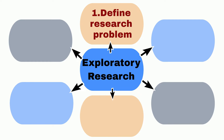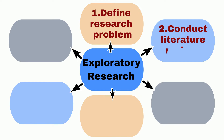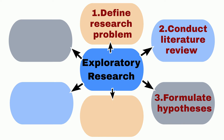The second step involves conducting a literature review to gather information on the research problem. This involves researching and analyzing existing literature such as articles, books, and reports. Based on the literature review, hypotheses can be formulated to guide the research.